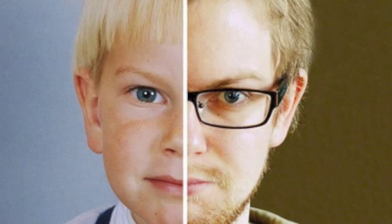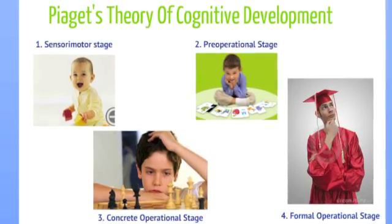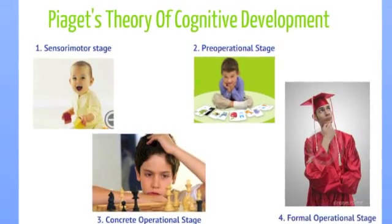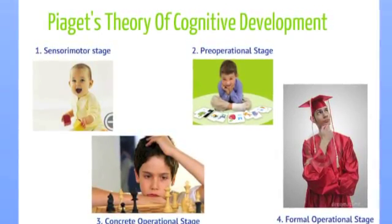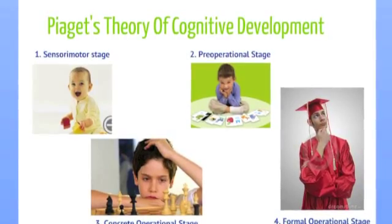His ideas provide an explanation of the development of human thinking from infancy to adulthood. The four stages of Piaget's theory of cognitive development are sensory-motor, pre-operational, concrete-operational, and formal-operational.